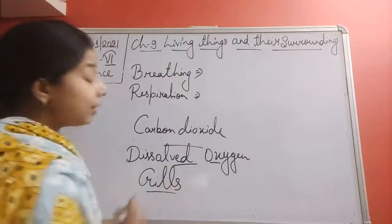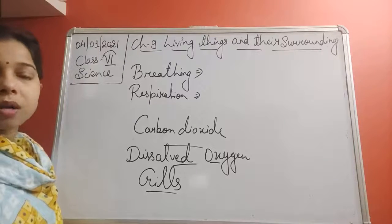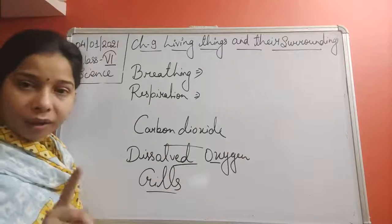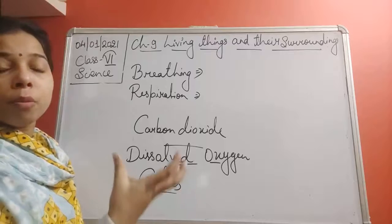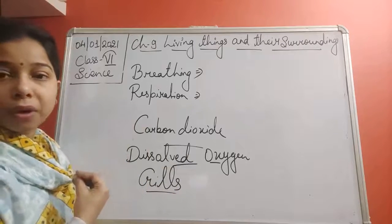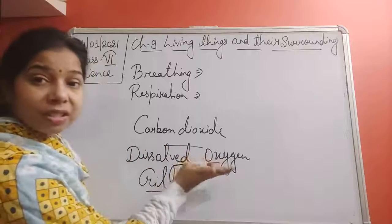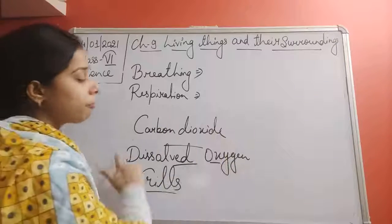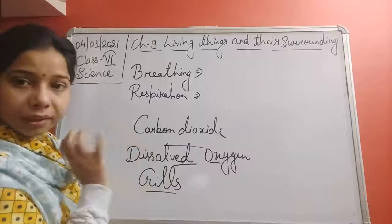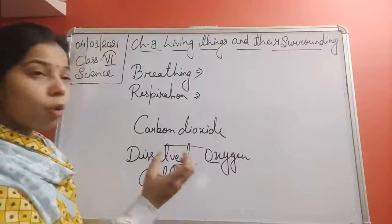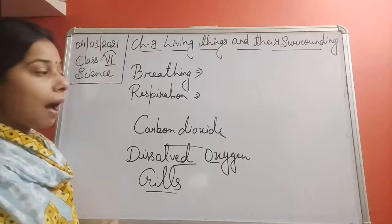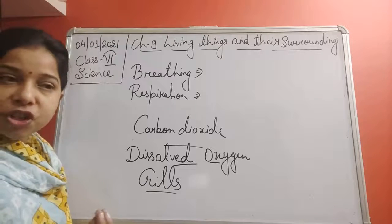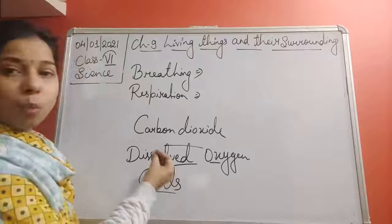That special organ present in fish is gills. The gills obtain oxygen from the water. Through their mouth, fish take in a lot of water containing dissolved oxygen. The gills extract this dissolved oxygen from the water, the oxygen is used by the fish's body, and carbon dioxide is released back into the water.